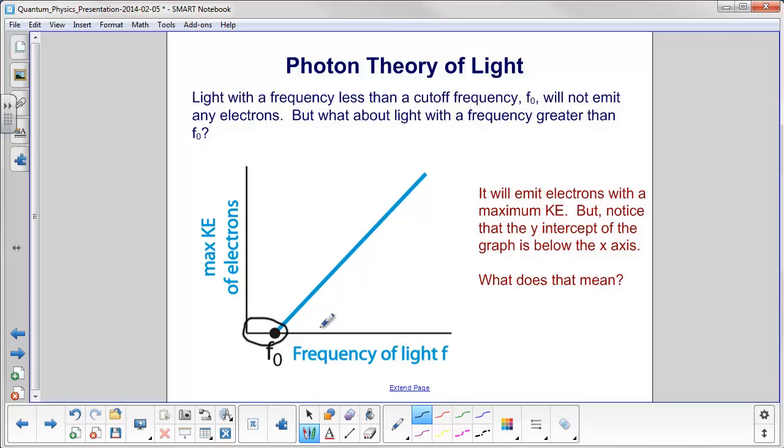But now let's look at light with the frequency greater than this cutoff frequency down here. We'll see that it emits electrons with the maximum kinetic energy. And the higher the frequency, the higher the kinetic energy.